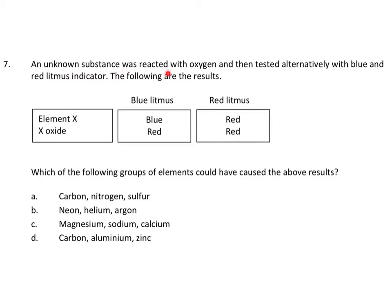An unknown substance was reacted with oxygen, so we're going to be talking about oxides. It was then tested alternately with blue and red litmus indicator. Blue litmus is blue in base and red in acid. If you put either of these in a neutral solution, their color doesn't change.